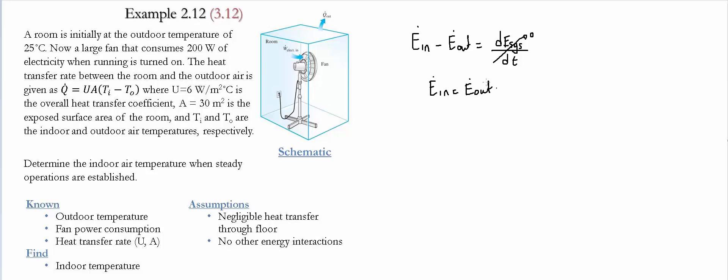and the amount of energy leaving the system is the amount of heat transfer from the room to the outside. So then the amount of energy going in we have it to be 200 watts. And the amount of energy leaving is q dot which is written to be U times A times Ti minus T naught.